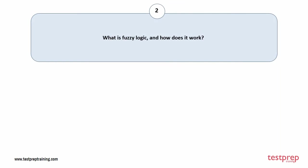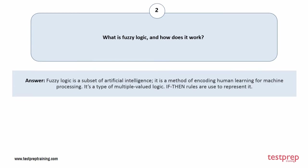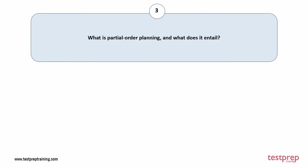Question number two: what is fuzzy logic and how does it work? Fuzzy logic is a subset of artificial intelligence. It is a method of encoding human learning for machine processing. It's a type of multiple-valued logic, and if-then rules are used to represent it.